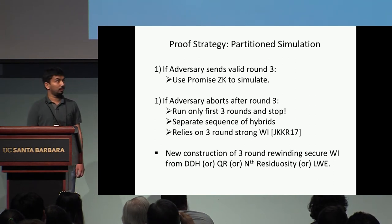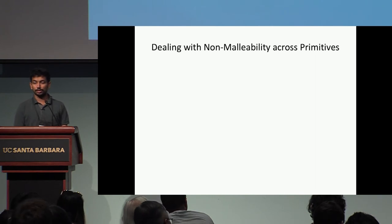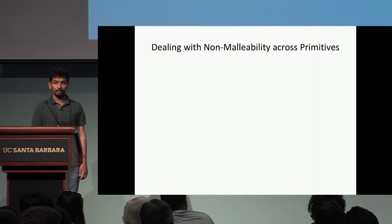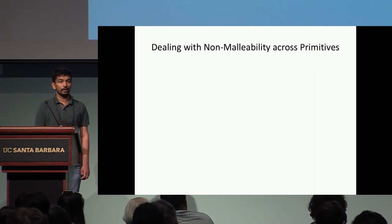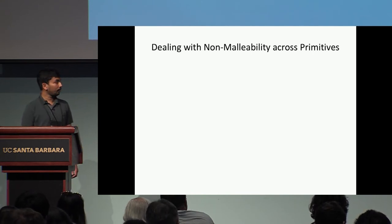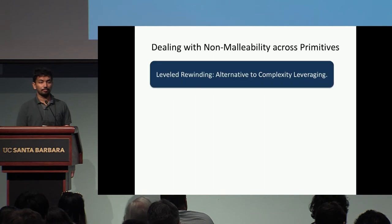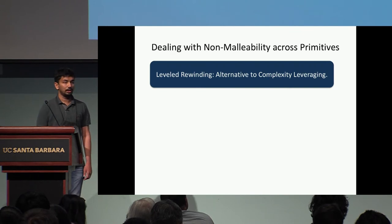I'd also like to address a common concern in constant-round protocols. When several primitives run in parallel, we need non-malleability not just within each primitive but across different primitives being parallelized. Several previous works used complexity leveraging to handle this, which requires sub-exponential hardness assumptions. Since our goal is polynomial-time standard assumptions, we use the technique of leveled rewinding to circumvent this issue.